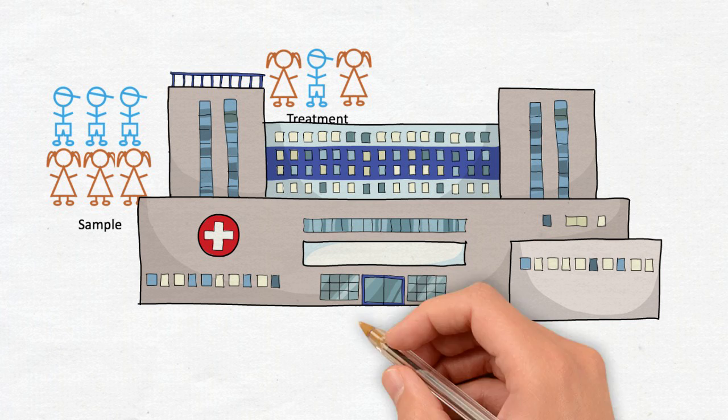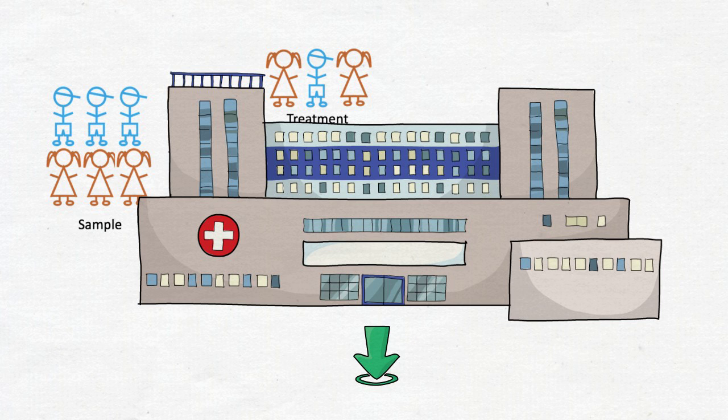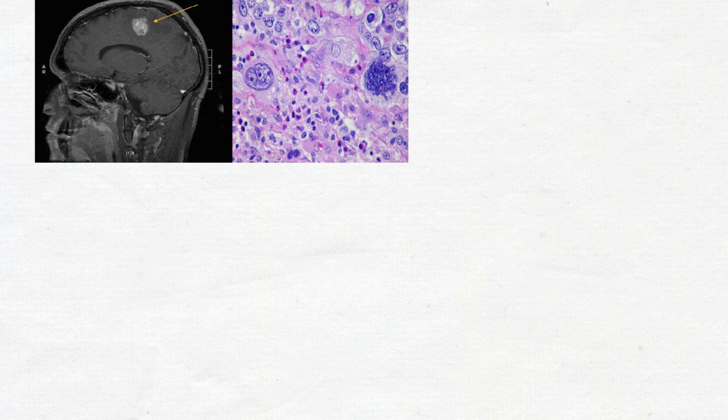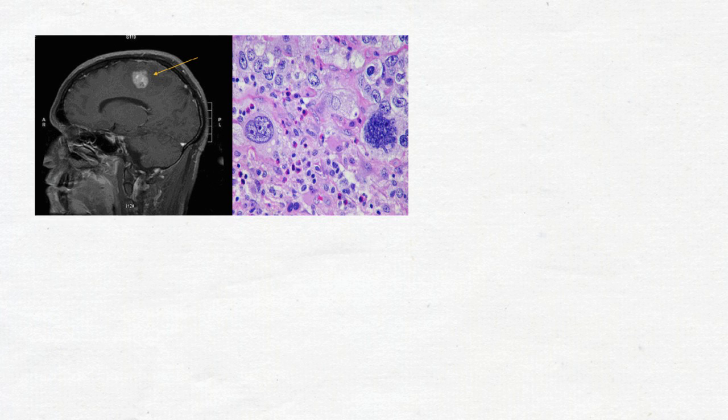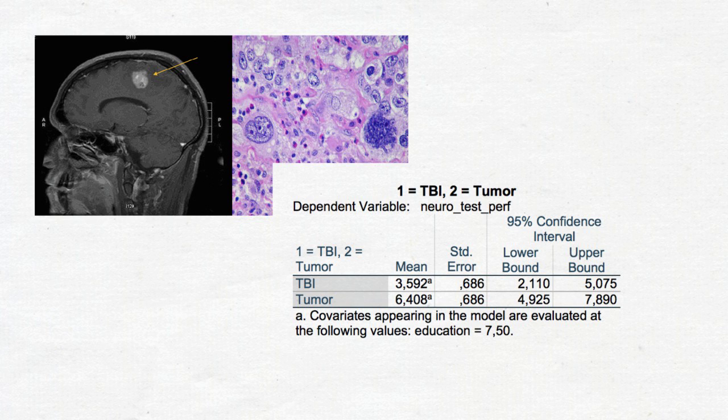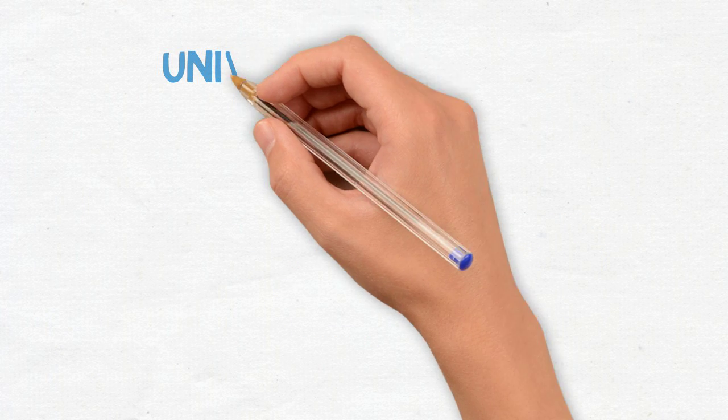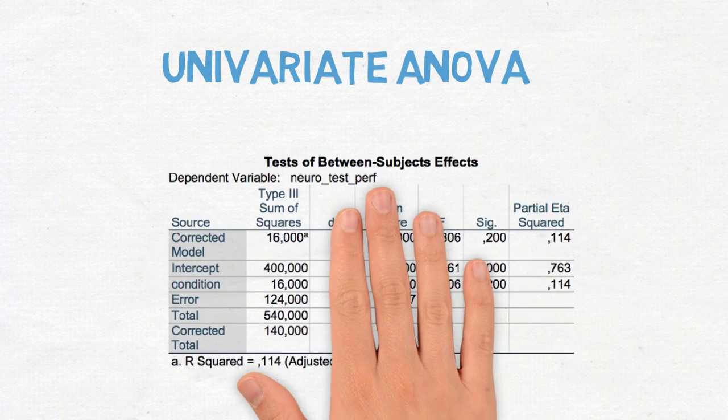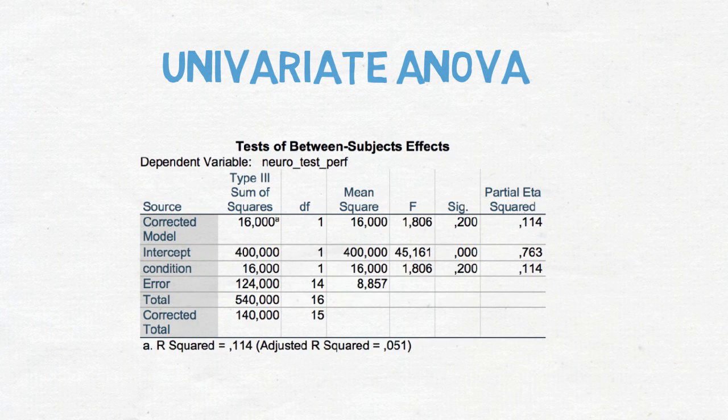Let's look at a fictional example and actually run and interpret an ANCOVA. Let's say we are interested in the neuropsychological test performance of two different groups. Patients with lesions, either due to a traumatic brain injury or a tumor resection. We are going to use education as a covariate. First, we run a univariate ANOVA and check for differences between groups. We test whether population means are equal without taking into account potential biases, so the initial differences.